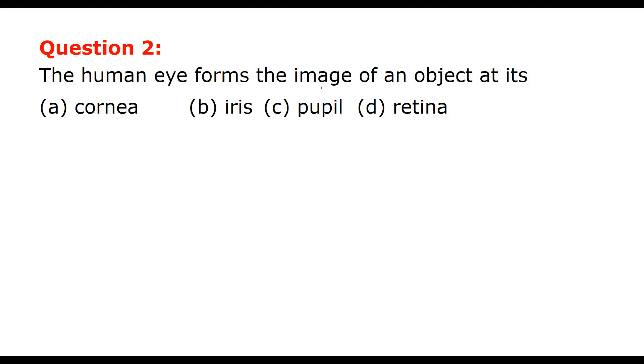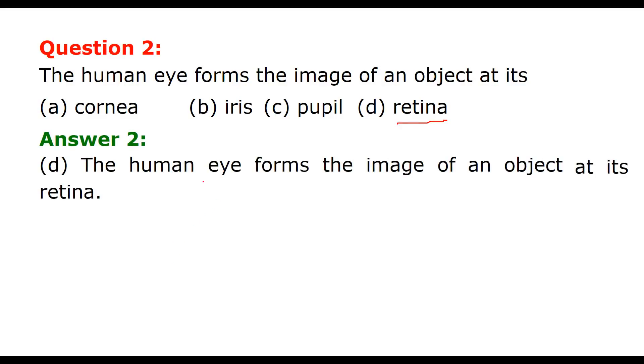The human eye forms the image of an object at its retina. Retina is the place where human eye forms the image of an object. The answer is retina, D.